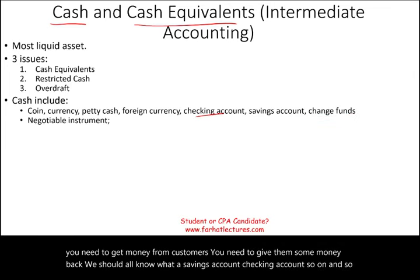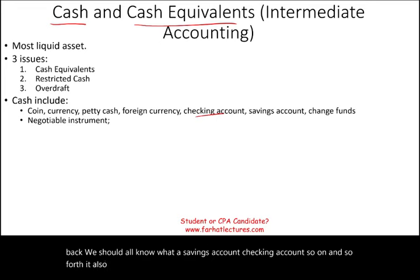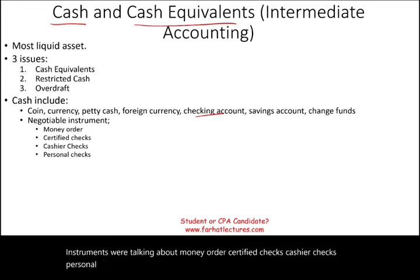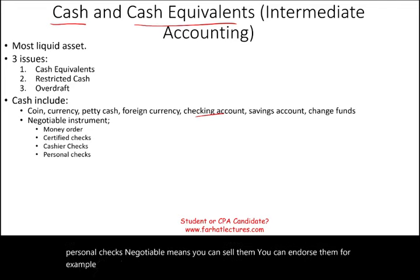Cash also includes negotiable instruments — money orders, certified checks, cashier's checks, and personal checks. Negotiable means you can sell or endorse them. For example, if you have a check from someone, you can endorse it and sell that check. That is also considered cash.